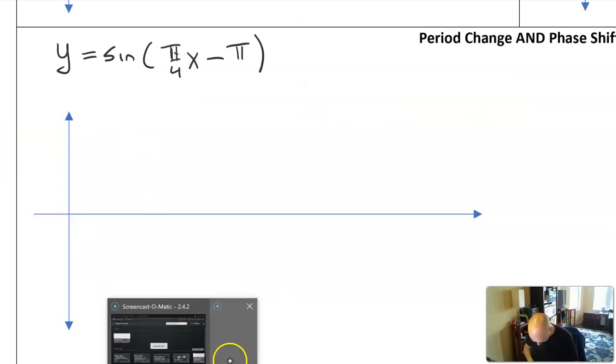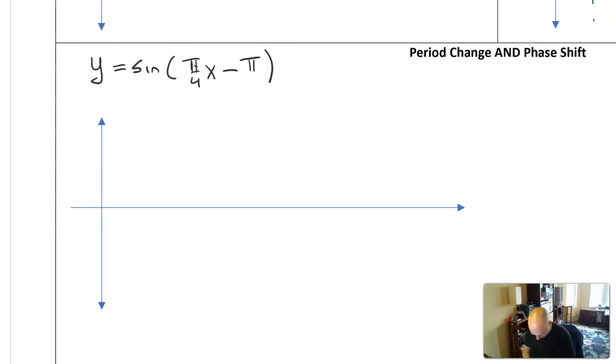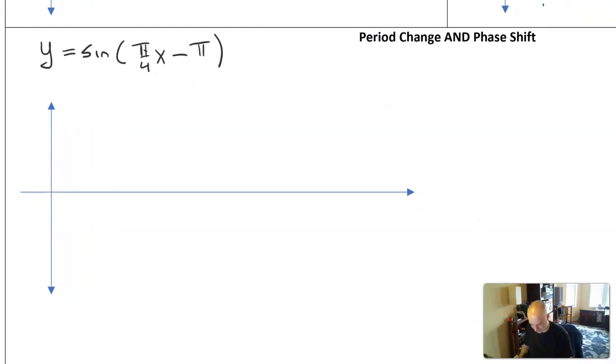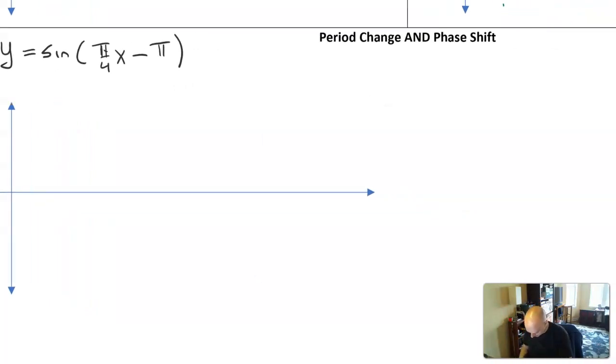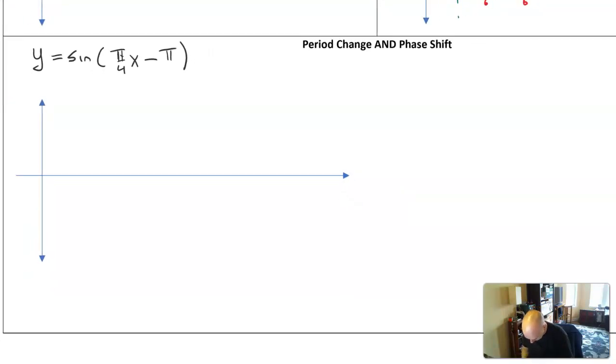Hi team. Let's see what happens if you have both a period change and a phase shift. Now, I want to apply this idea of locating the start and end of the period for this. To find the start, I need to set the argument equal to 0. So I'm going to say pi over 4 x minus pi equals 0. I'm going to locate the end of a period. I'm going to say pi over 4 x minus pi equals 2 pi.